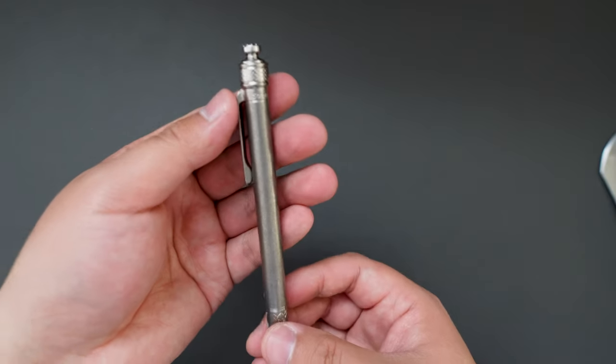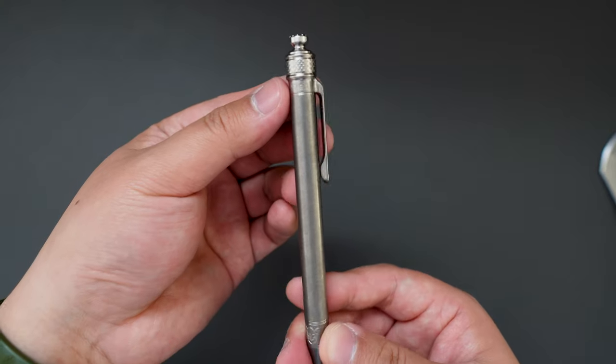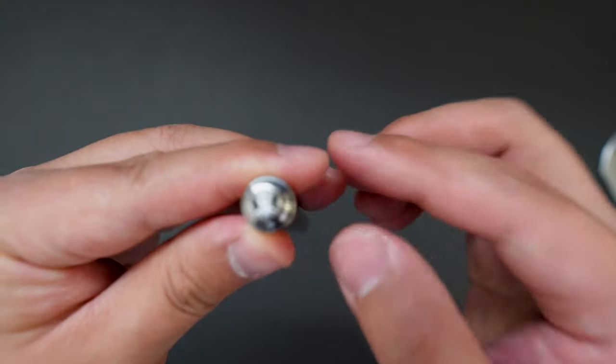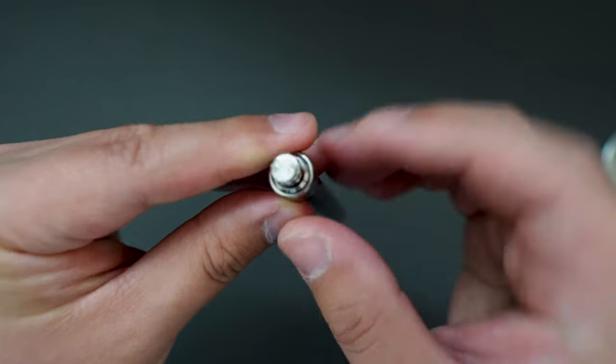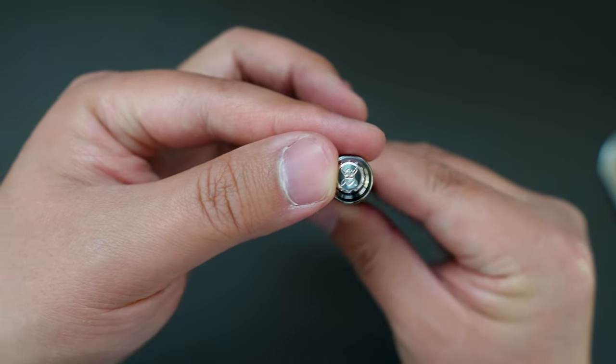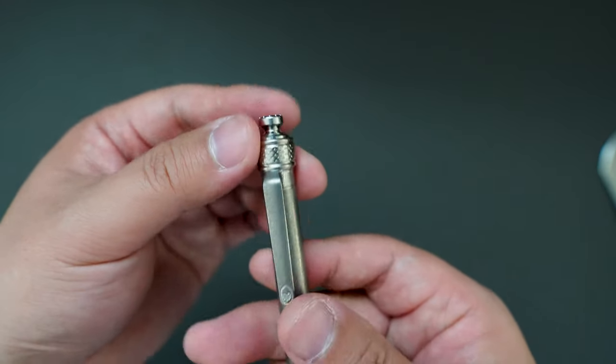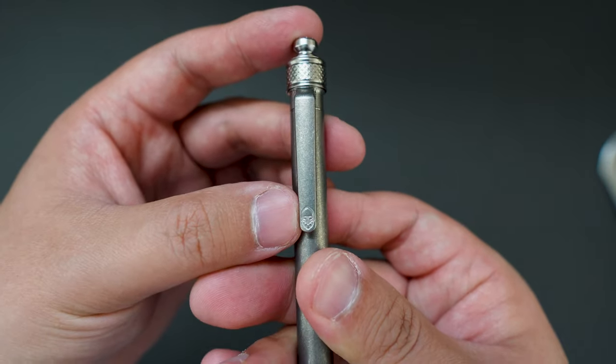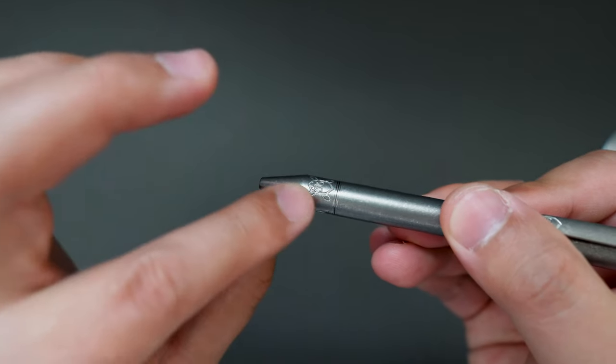It looks super clean. And there is the Grimsmo logo here. Don't know if you can see it. Logo on the click. And there is logo on the clip as well. And also there is logo on the tip.